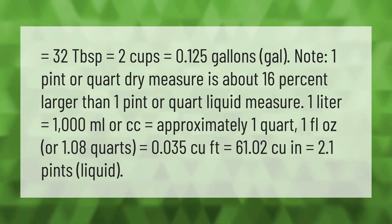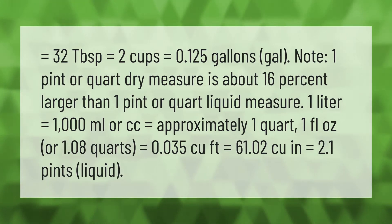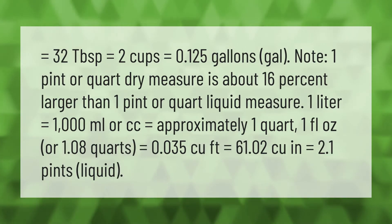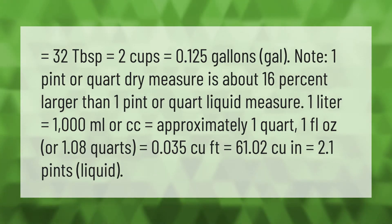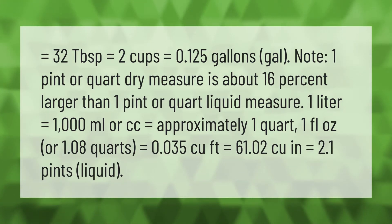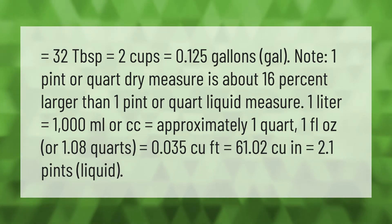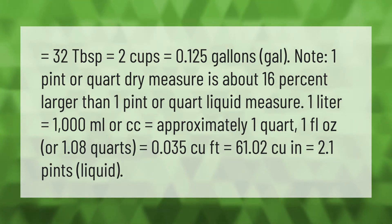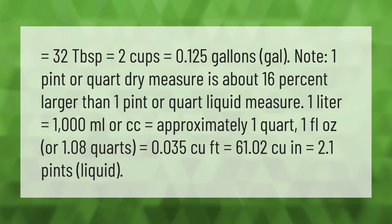Equals 32 tablespoons, equals 2 cups, equals 0.125 gallons. Note: one pint or quart dry measure is about 16% larger than one pint or quart liquid measure. One liter equals one thousand milliliters or cc, equals approximately one quart, one fluid ounce, or 1.08 quarts, equals 0.035 cubic feet, equals 61.02 cubic inches, equals 2.1 pints liquid.